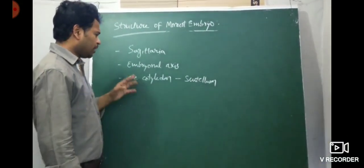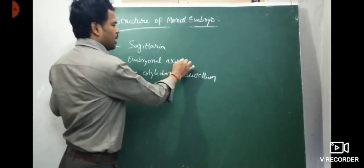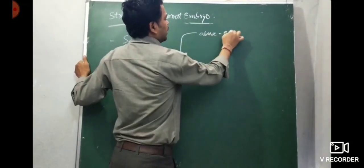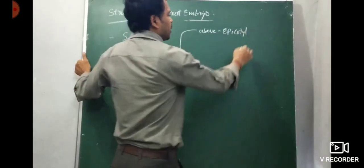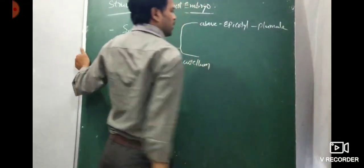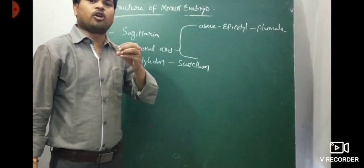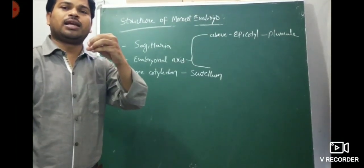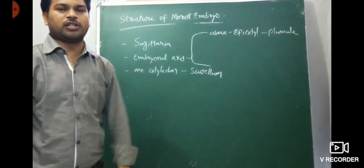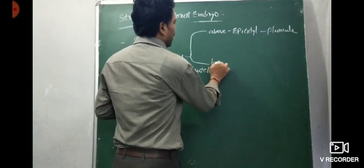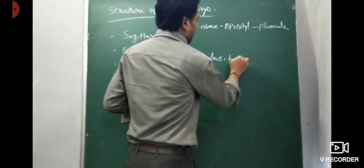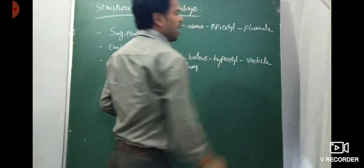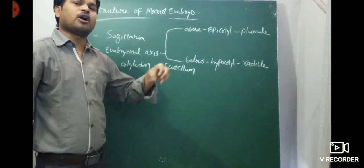The portion of the embryonal axis above the cotyledon is the epicotyl, which turns into the plumule. The plumule has a halo-like structure with shoot and leaf primordia. The portion of the embryonal axis below the cotyledon is the hypocotyl, which turns into the radicle or root tip, covered by the root cap.